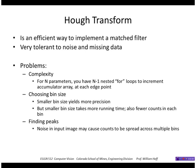It's complex, especially for shapes with many parameters, because we need a lot of for loops to increment the accumulator array at each edge point. And there's a trade-off between bin size: smaller bin sizes yield more precision but they take more running time and also there are fewer counts in each bin.